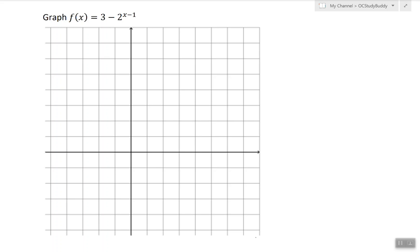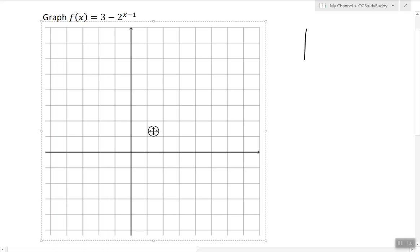In this video I will show you how to graph a function by plotting points. So here we have a function defined by the expression 3 minus 2 to the power of x minus 1, and to graph it I'm going to construct a table of input outputs.